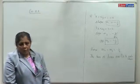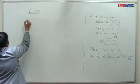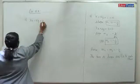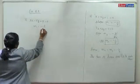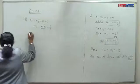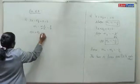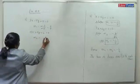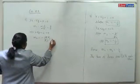Third question: for lines 3x minus 5y plus 7 equals 0 and 15x plus 9y plus 4 equals 0. M1 equals minus 3 by minus 5 equals 3 by 5. M2 equals minus 15 by 9, simplified to minus 5 by 3.